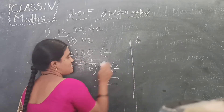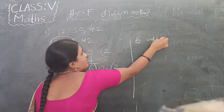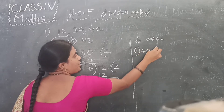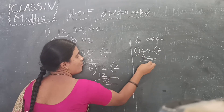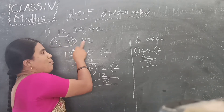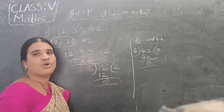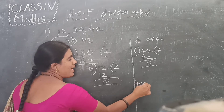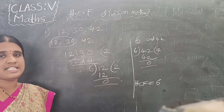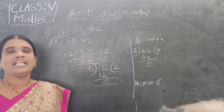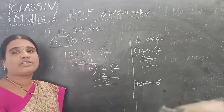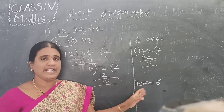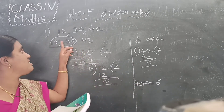Now you have to do the division with 6 and 40. In the 6 times table, 6 times 6 is 36, and 6 times 7 is 42. So finally, in the division of all three numbers, when you get the remainder as 0 — we are doing the division with 6. So you have to write HCF = 6, because we got remainder 0 when dividing with 6.